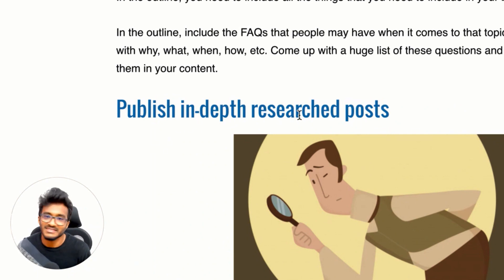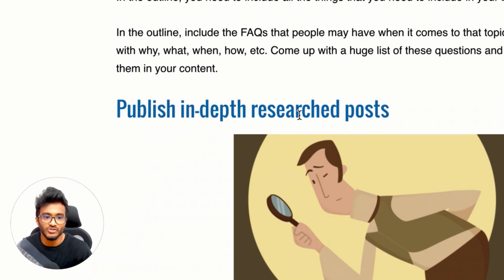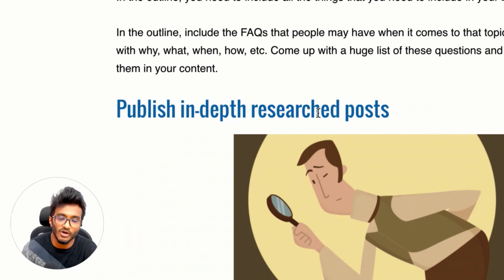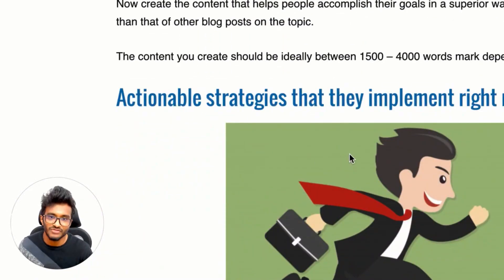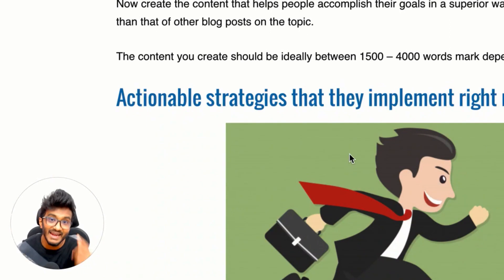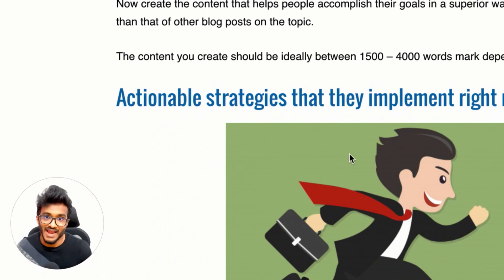For example, whenever someone searches for 'searcher task accomplishment' and comes across my blog post, the chances of them going back to click another result are low — because the article is high quality, well researched, and addresses all questions readers may have. Publish in-depth posts so people find your post the ultimate resource. Also include actionable strategies they can implement right now. When they implement those strategies, it signals to Google that their current goal has been accomplished.